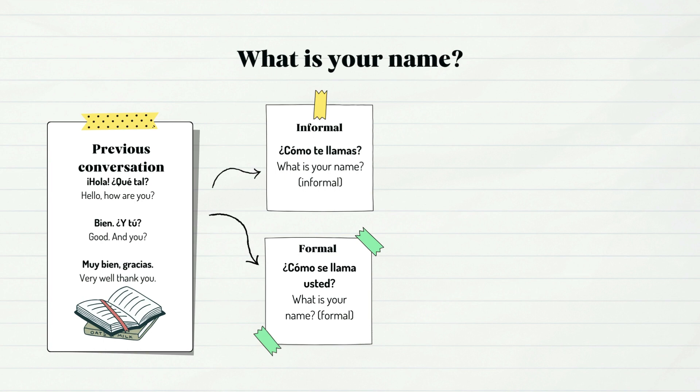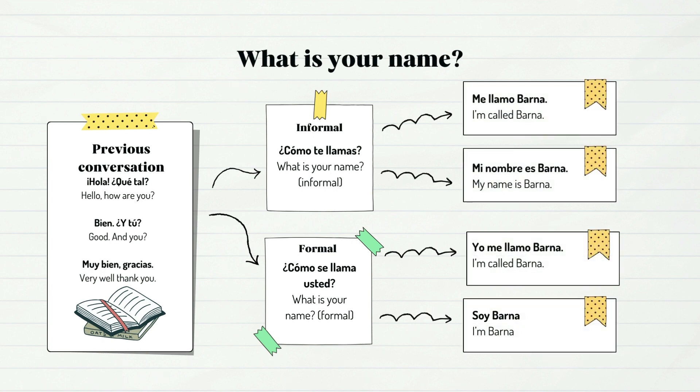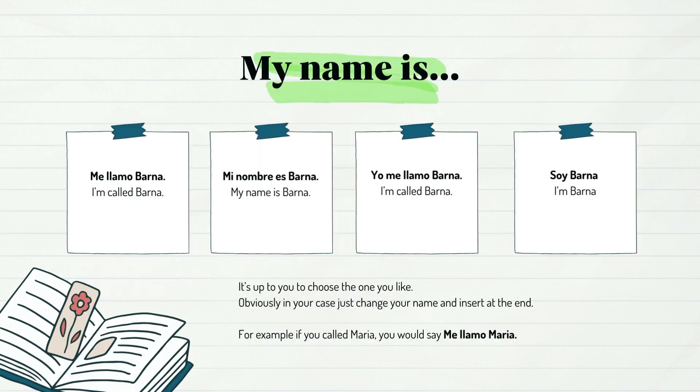¿Cómo te llamas? We can use ¿Cómo te llamas? with our friends or someone with a similar age, but in a formal setting, we would use ¿Cómo se llama usted? And our simple answer can be: Me llamo Barna, Mi nombre es Barna, Yo me llamo Barna, or Soy Barna. It's up to you to choose the one you like.